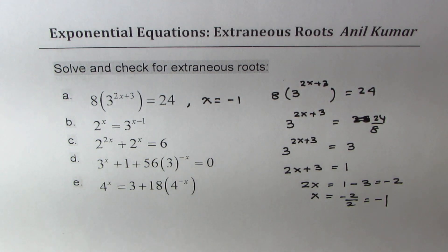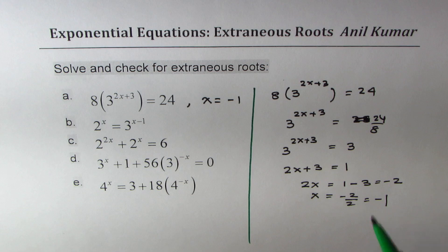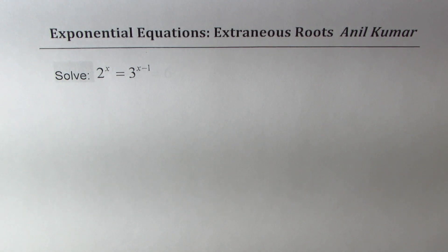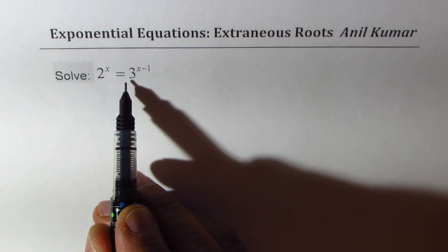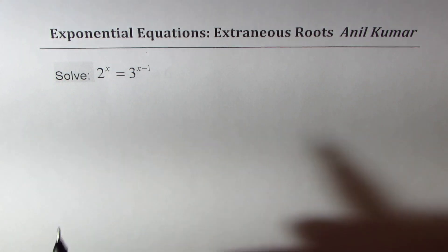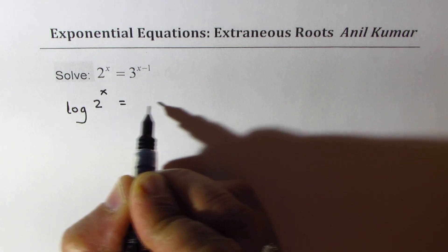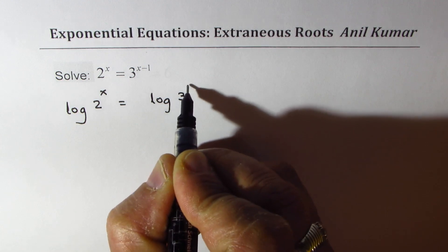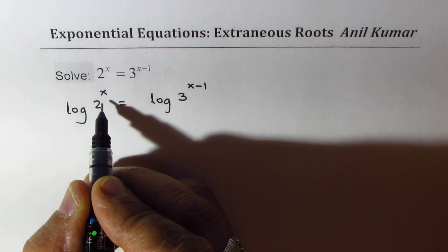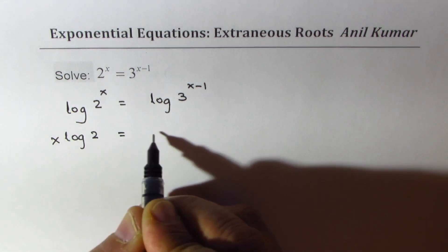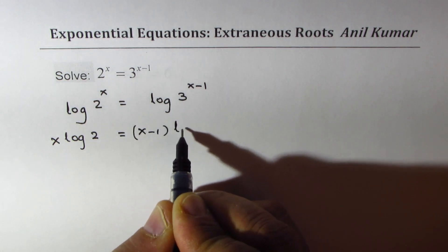You have solved many exponential equations without using logarithms. Now let's take up examples where logarithms may be required. The second equation is 2 to the power of x equals 3 to the power of x minus 1. Taking logarithms of both sides, we get log of 2 to the power of x equals log of 3 to the power of x minus 1. Applying the power property, x times log 2 equals x minus 1 times log 3.